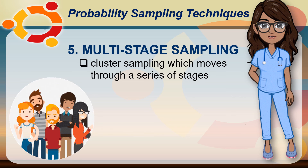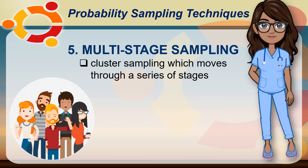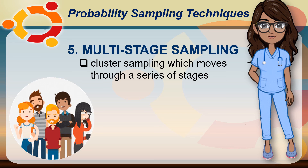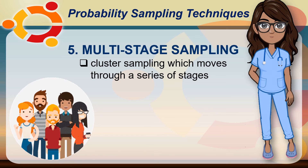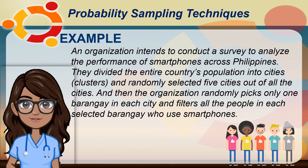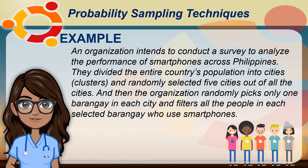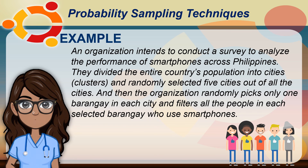The fifth type is multi-stage sampling. This refers to a procedure similar to cluster sampling but moves through a series of stages. For example, an organization conducts a survey to analyze smartphone performance across the Philippines. They divide the entire country's population into cities or clusters, randomly select five cities, then randomly pick one barangay in each city, and filter all people in each selected barangay who use smartphones.